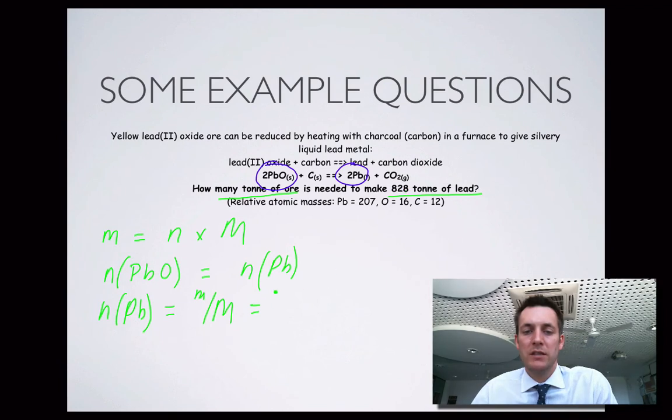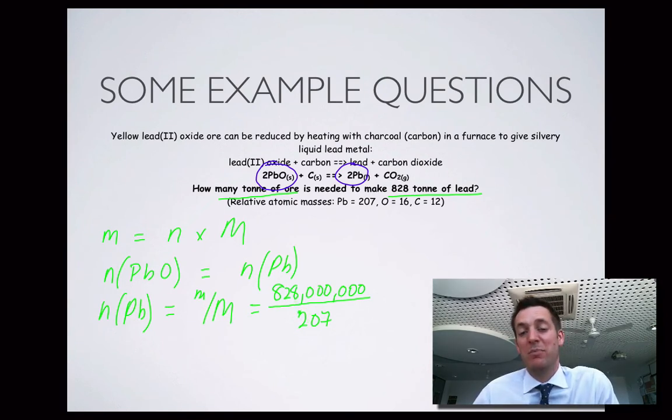It's 828 tons or 828 million grams because there's a thousand kilograms in a ton, thousand grams in a kilogram. Divide that by the molar mass of Pb, 207. I have absolutely no idea what that would be in my head, but it looks like about 3.6 million moles. Whatever number it is, let's call it x.